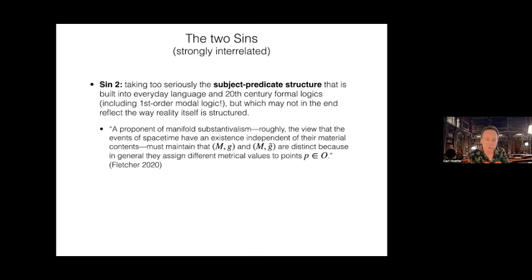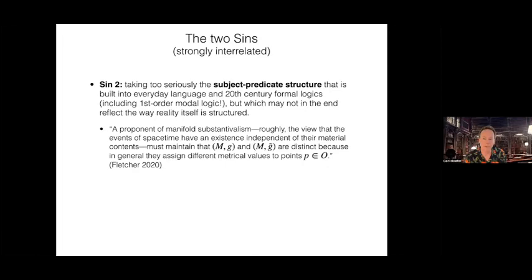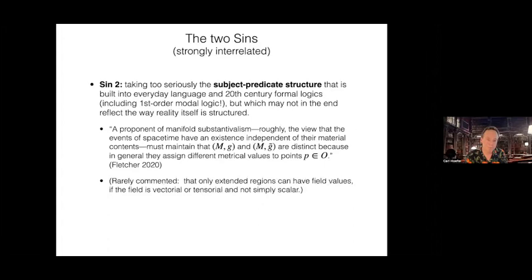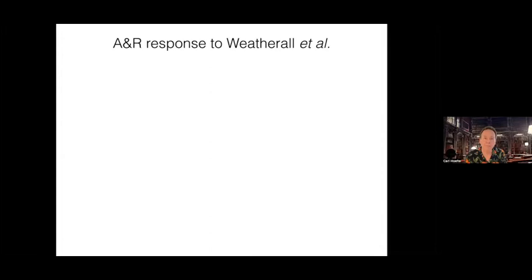Here's a quote from Sam Fletcher — on the heavy math side of the recent literature. A proponent of manifold substantivalism, roughly the view that the events of space-time have an existence independent of their material contents, must maintain that M,g and M,g-tilde — that's the shifted model — are distinct because, in general, they assign different metrical values to points P that are members of these models. One thing almost never commented on is that actually points can't have metrical values. The metric field is a tensor, and tensor values cannot be attributed to a point on its own. The only kind of field that can be straightforwardly attributed to a point is a scalar field, and the upshot of that for the debate is pretty much never discussed.